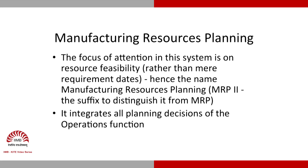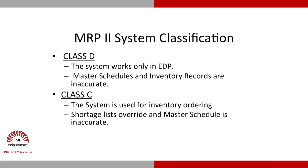Our focus has now shifted from mere material requirements to whether we have adequate manufacturing resources — hence the name Manufacturing Resources Planning, MRP II. The acronym remains MRP, so we call this MRP II. MRP II fundamentally integrates all planning decisions of the operations function.